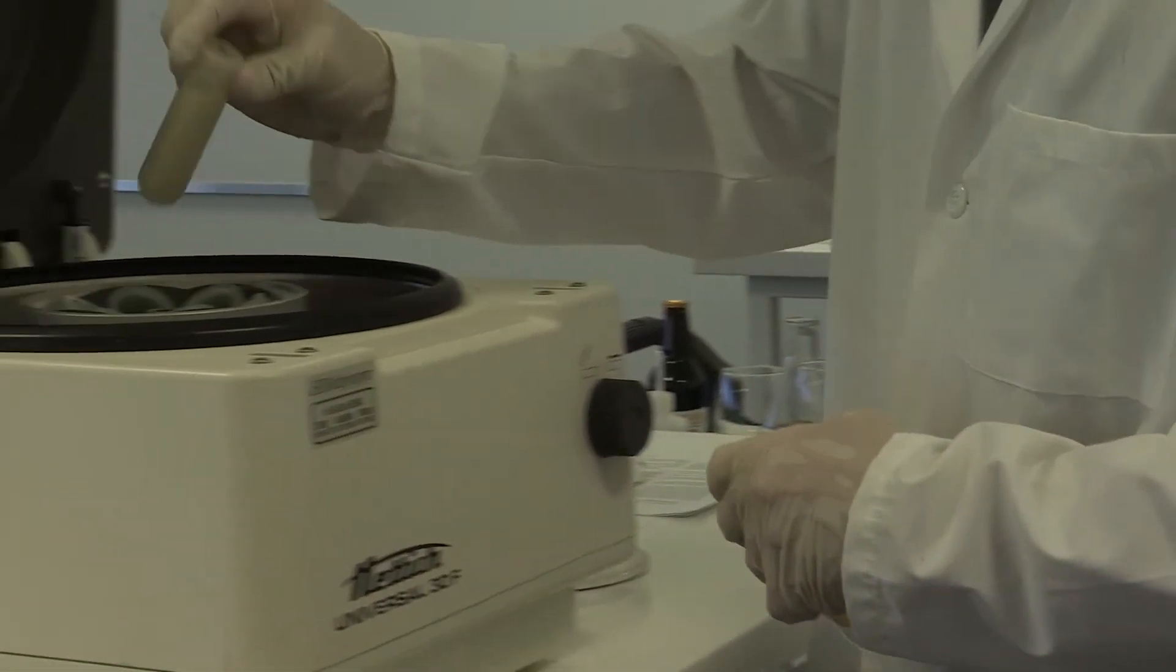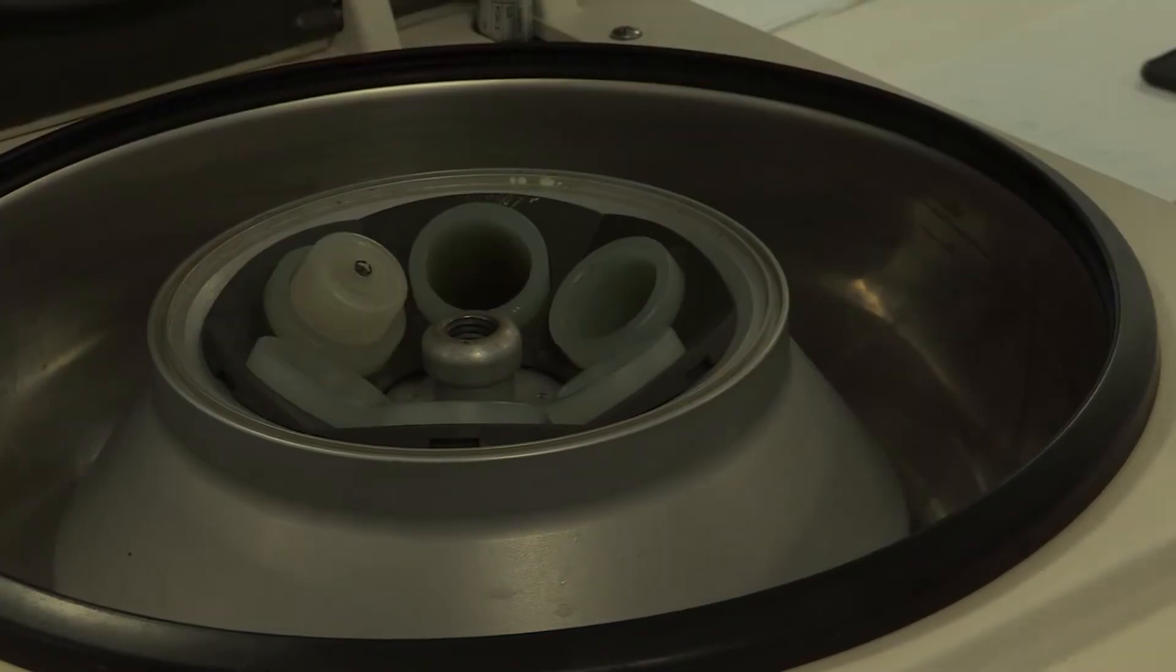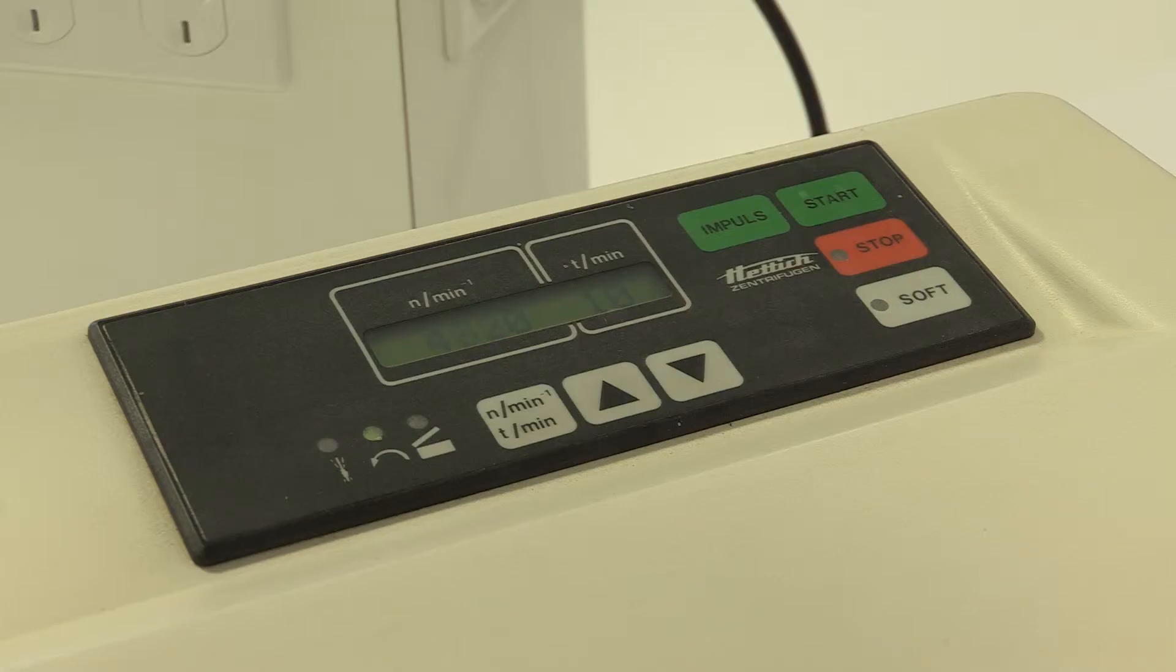After the extraction, the sample is usually centrifuged to separate the phases, and we take the top iso-octane phase.